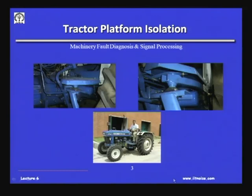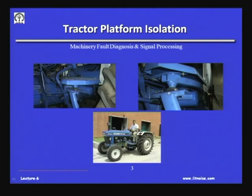To begin with, consider the case of tractor platform isolation. Here we have a tractor with a platform where the driver puts their feet. Because of the engine's dynamics, none of the vibrations from the engine should get transmitted to the platform or seat. Looking closer, there are anti-vibration rubber mounts between the platform and the chassis of the tractor, which actually supports the engine.